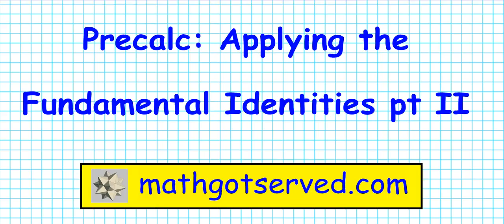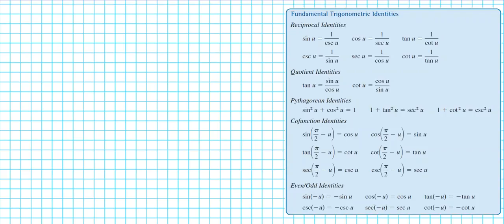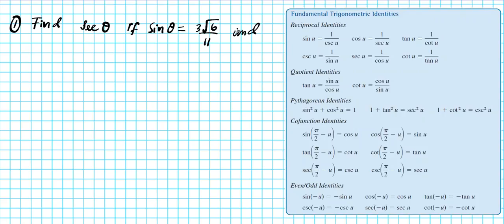Good day students, welcome to mathgoodserve.com. In this clip we're going to be going over part two of applying the fundamental identities. For this example, let's consider the following problem: find secant theta if sine theta equals three root six over eleven, and theta is in quadrant two.